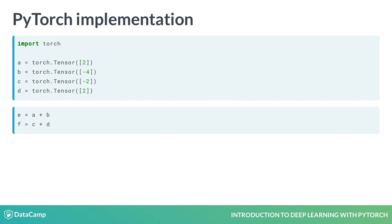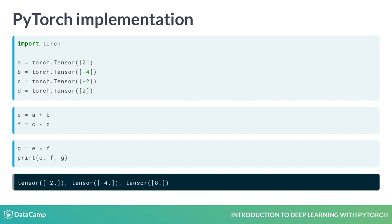We then add A and B to tensor E, and we multiply C with D, putting the result in tensor F. Finally, we multiply E with F, putting the result in tensor G, and then we print the values of these three tensors, getting the same result as in the slide.